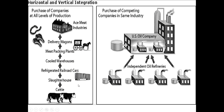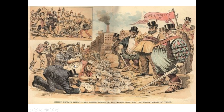Vertical integration: cattle to slaughterhouse, to railroad cars, to warehouses, to meat-packing plants, to delivery wagons, to stores. To vertically integrate the meat industry you'd need to own a farm, slaughterhouse, railroad cars, warehouses, meat-packing plants, and delivery wagons. That's a lot of work. Horizontal integration is where you control just one step — like Rockefeller controlling all oil refining. If you owned all the warehouses in America, that would be a horizontally integrated monopoly.